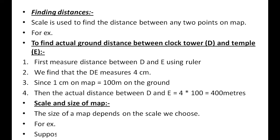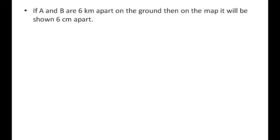For example, suppose 1 centimeter on a map equals 1 kilometer on the ground. If A and B are 6 kilometers apart on the ground, then on the map it will be shown 6 centimeters apart.